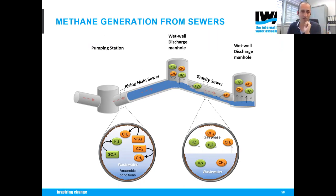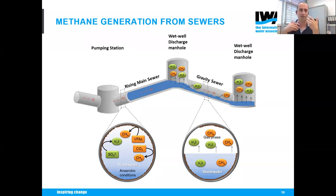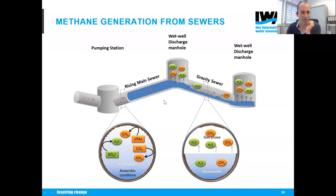These compounds become problematic when released to the atmosphere, which happens in gravity sewers, manholes, or wet well discharges where the pipe transitions from fully full to having a gas phase. At that point, the dissolved compounds strip into the atmosphere. So: generation occurs in rising mains, and stripping/release occurs in gravity sections and manholes.